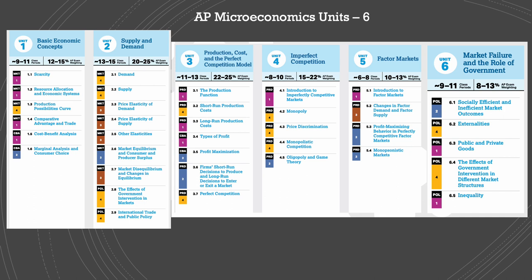Then we'll move to production costs in the short-run and the long-run, types of profit maximization, and firm's decision making in the short-run and the long-run. Then we'll move to product markets, which are perfect competition, monopoly model, price discrimination, monopolistic competition, oligopoly, and we'll learn about game theory. From product markets we'll move to factor markets, and we'll apply it to the labor market, and we'll learn about changes in factor market supply and demand, profit maximization behavior in the factor market, and the imperfect competition model of factor market, which is the monopsonistic market.